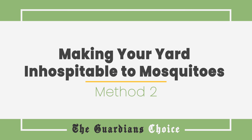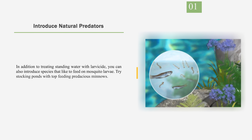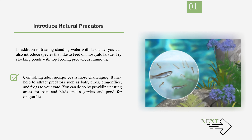Method 2: Making your yard inhospitable to mosquitoes. Number 1: Introduce natural predators. In addition to treating standing water with larvicide, you can also introduce species that like to feed on mosquito larvae. Try stocking ponds with top-feeding predaceous minnows. Controlling adult mosquitoes is more challenging — it may help to attract predators such as bats, birds, dragonflies, and frogs to your yard by providing nesting areas for bats and birds and a garden and pond for dragonflies and frogs.